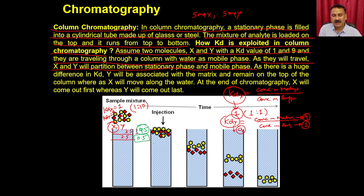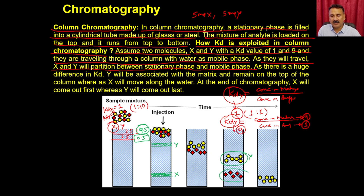Consequently, Y becomes immobilized near the top of the column since it prefers to remain with the matrix phase, while X moves toward the bottom since it prefers the buffer phase. When you elute, X comes out first and Y comes out later. This large difference in Kd values is what drives the separation.